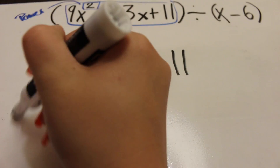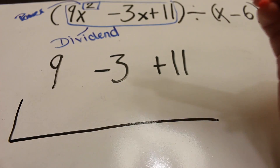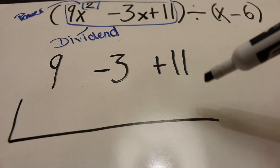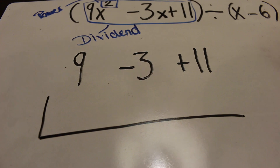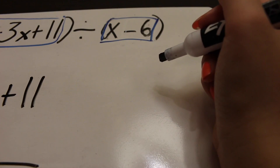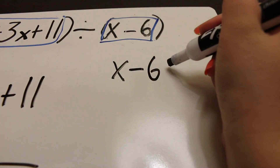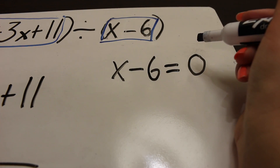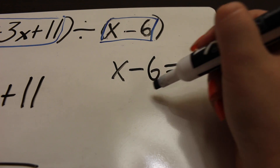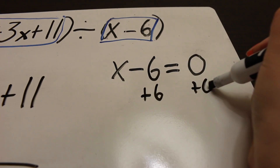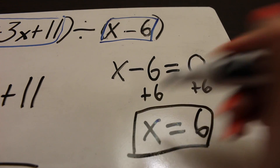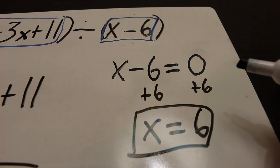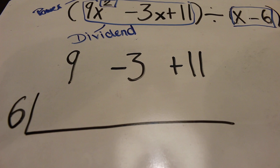Then you create two lines and leave some space because you're going to put some numbers there. On the outside, you look at the divisor, which is x minus 6. Write down x minus 6, set it equal to 0, and solve for x — add 6 on both sides, so x is 6. That's the number you put on the outside.